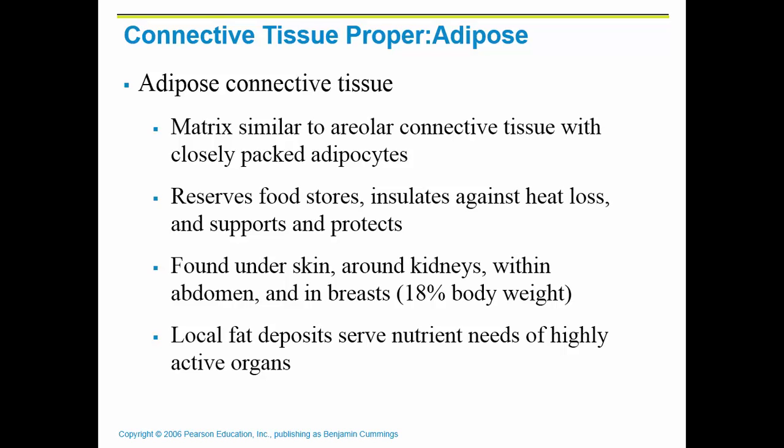Adipose tissue is also a connective tissue under the connective tissue proper umbrella. Adipose tissue is fat, and its main function is to insulate and to protect. Every connective tissue has a matrix, which is the non-living portion. The matrix of adipose tissue is similar to areolar, but the adipocytes, which are the fat cells, are closely packed, so they look totally different than the loose areolar. Adipose tissue is found under the skin — you have a layer of fat underneath your skin to protect and insulate.